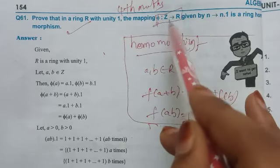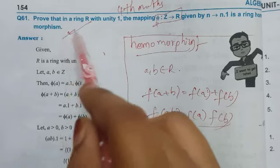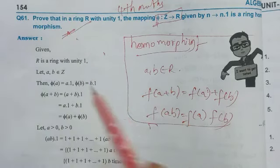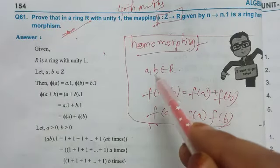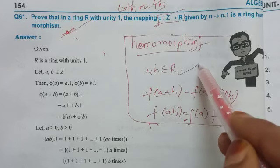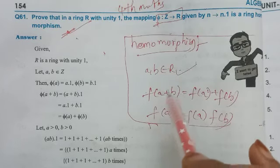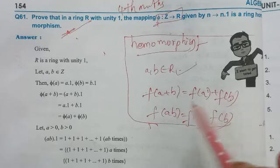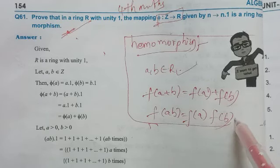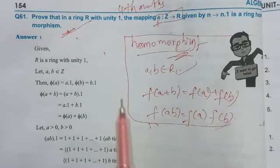So, if we have phi as a homomorphism, it is true. Ring homomorphism means if you have this function, f of (A plus B) is equal to F of A plus F of B, and F of AB is equal to F of A into F of B. So, we have a ring homomorphism.